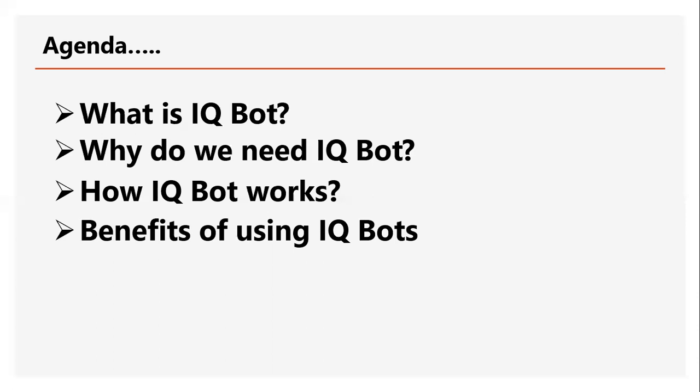Once you upload any documents into the IQ Bot designer, IQ Bot uses machine learning and AI features to understand the pattern of the data — what information is available, column details, whether it is table format data, and so on. It creates logic around what information is available in the particular input file, whether PDF, image, or other formats. In simple terms, it uses intelligent automation and machine learning to understand the structure of the data, then helps convert that data into structured format.